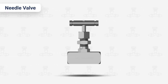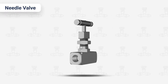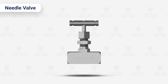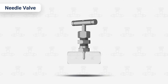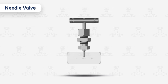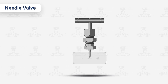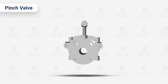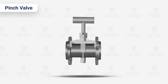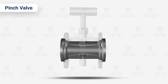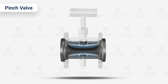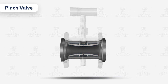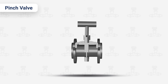Needle valve. Typically used in a small diameter piping system when fine, accurate flow control is needed. Needle valves get their name from the point on a conical disc used within. Pinch valve. Often used for handling solid materials, slurries, and liquids with suspended solids, pinch valves use a linear motion. Typically, pinch valves feature an internal sleeve to isolate the media.